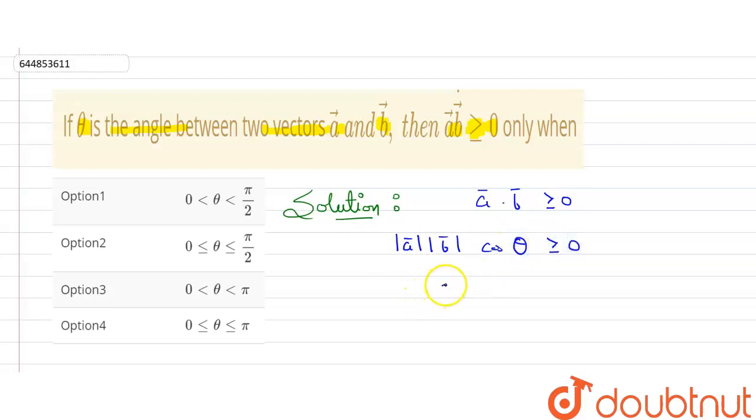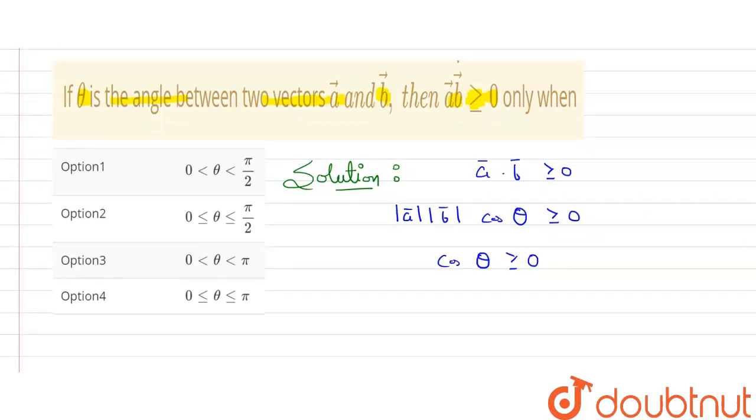From here, cos theta will be greater than equals to zero. A and B magnitude shifted to the other side. Now cos theta is greater than equals to zero. This is the condition.